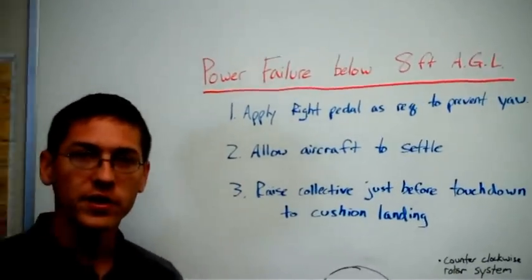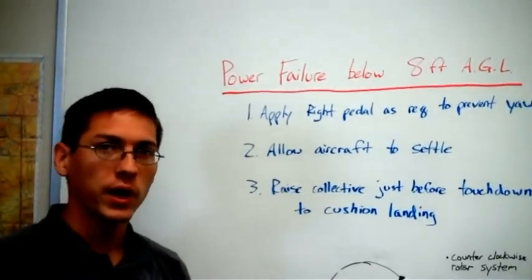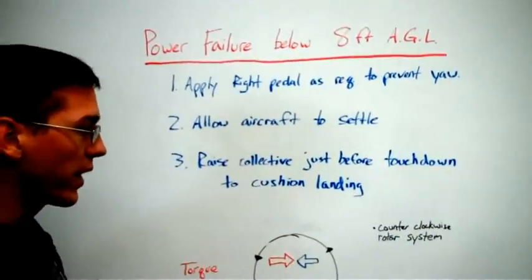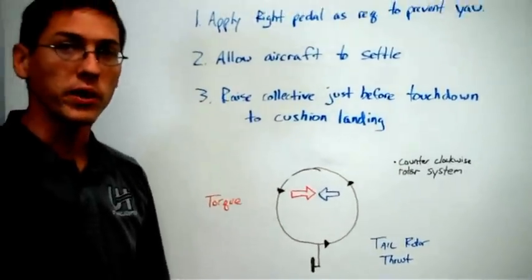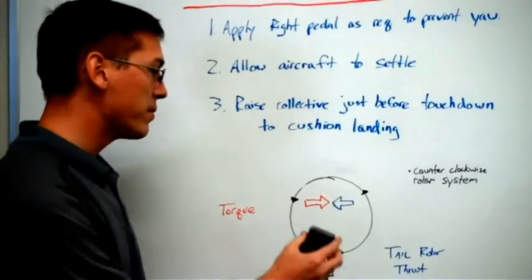So, in a normal hover, the engine is producing torque as it tries to drive those blades around. And due to our counterclockwise system, the minute the engine fails or we lose power, we eliminate torque.